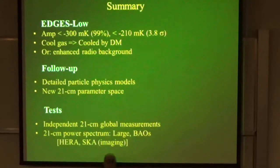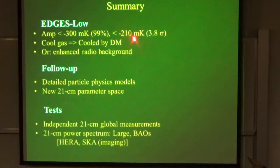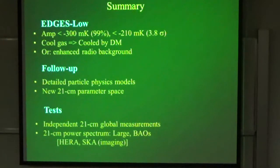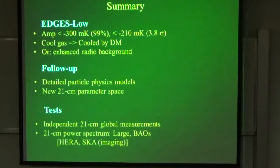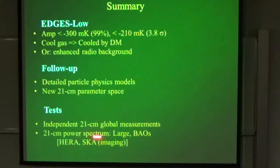Briefly to summarize: we have the EDGES Low first claimed detection from the early universe. The amplitude is apparently strong compared to standard models. One interpretation is to have the gas cooled by dark matter; another is to enhance the early radio background. We need some patience — the theoretical follow-up is trying to come up with more ideas for early radio backgrounds. The most important thing is an independent measurement to verify the EDGES result, and a few years down the road we will have much more detailed measurements from fluctuations and the power spectrum, which will really determine what's going on. Thank you.